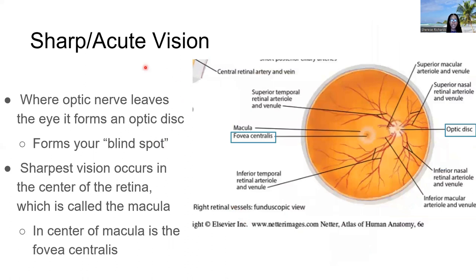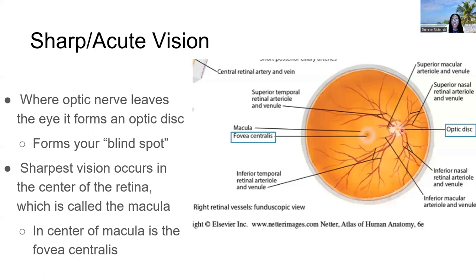The optic nerve must pierce the sensory layer to leave the eye, forming what's called the optic disc. The area where the optic nerve pierces the eye has no perception of vision — this is referred to as the blind spot. There are exercises we can use to find our blind spot, but essentially it is the one spot on the retina where no light can be perceived.